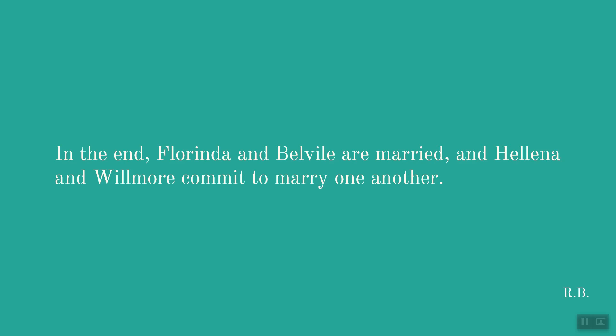These are the three plots, and as is very typical of comedies ending in marriage, Florinda and Belville are married at the end, and there is an indication that Hellena and Wilmore commit to marry one another. There is a second part of The Rover, but we do not need to discuss that now. For now I have given you an outline of the plot.